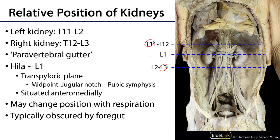Although not shown very well in this photograph, the left kidney typically sits higher than the right kidney. The left kidney is at about T11 down to about L2, whereas the right kidney sits at approximately T12 down to about L3. But this is a rough estimation, and the exact positions of the kidneys are a little more dynamic than we give them credit for.